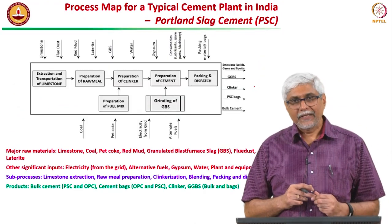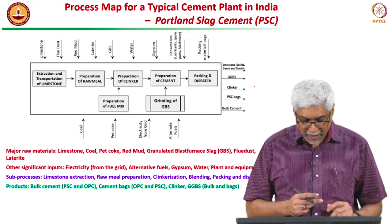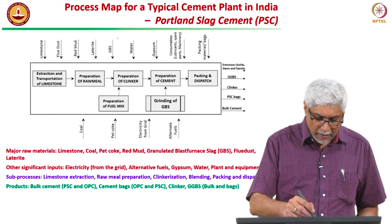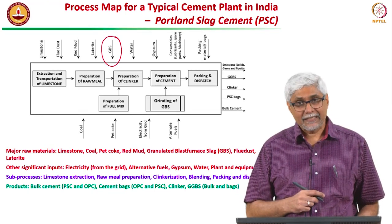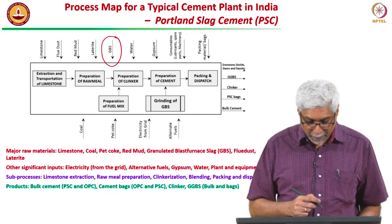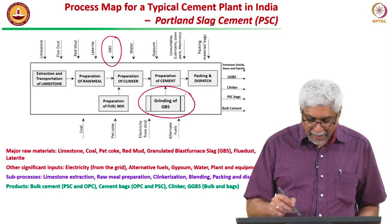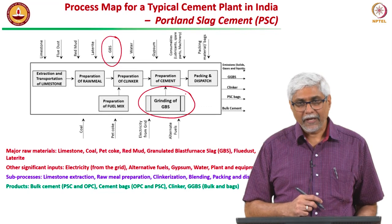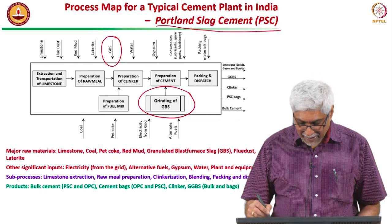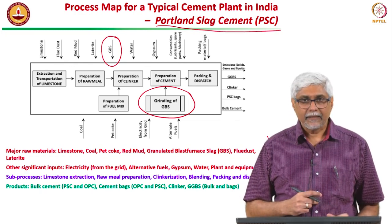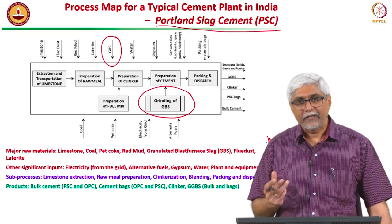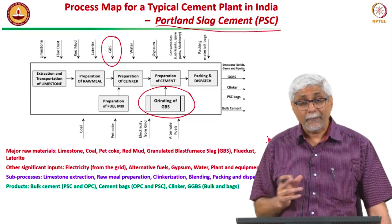For Portland Slag Cement, the process map will include everything as usual, but we also bring in GGBS — Granulated Blast Furnace Slag — into the plant. This has to be ground and put into the production of the cement. This is the modification required for Portland Slag Cement. Every time we look at a new type of cement, we have to see how the process map changes.